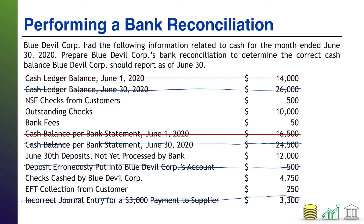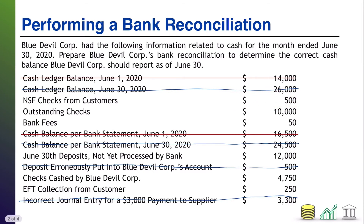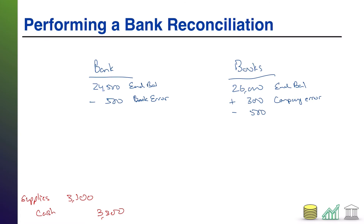First up: NSF check from customer. This is a bounced check — a customer paid us, or so we thought, and now we find out they really didn't. The bank knows the check bounced, so it's already factored into the bank's balance. We're the ones who didn't know. Whereas we thought we received $500 from a customer, we now find out we never got that money. So we subtract $500 NSF from the book side — we reduce our cash ledger because we never received that payment.